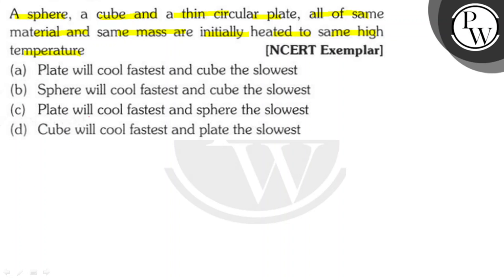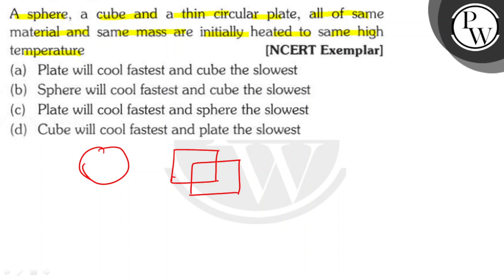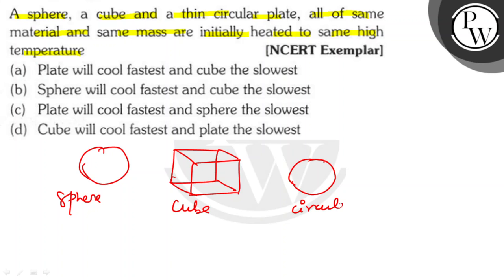What is happening? We have a sphere — a sphere has a circular shape. We have a cube. And we have a circular plate. This is the sphere, this is the cube, and this is the circular plate.